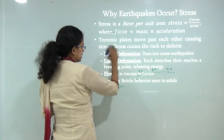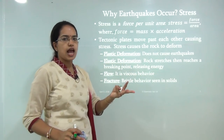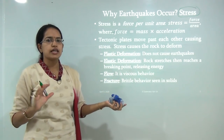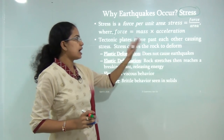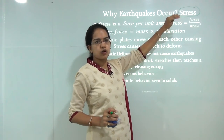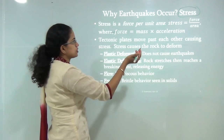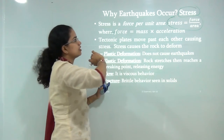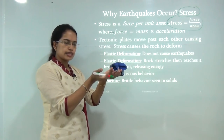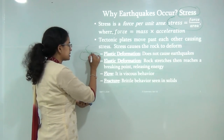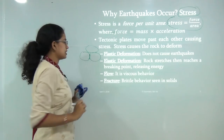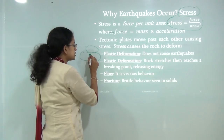Why do earthquakes occur? There are two basic things: stress and strain, which are the basic causes of earthquake. It's like a chicken-and-egg proposition — it's hard to say whether stress leads to strain or strain leads to stress, but both are definitely basic causes. Stress is force per unit area. When tectonic plates move along one another, stress is generated at the boundaries of the plate, and this stress leads to deformation.